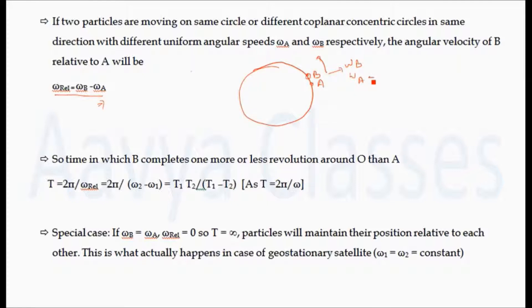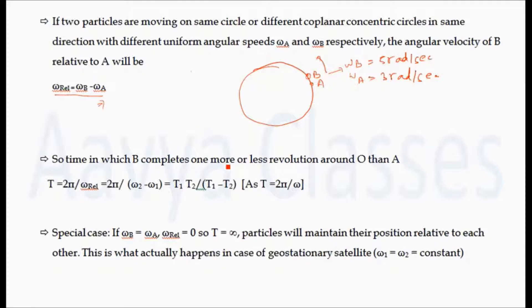Suppose omega_a = 3 radians per second and omega_b = 5 radians per second. That means in one second, omega_b will move 2 radians more than particle a. So particle b moves a bit faster and will cover the circle in less time compared to particle a. Now we will calculate the time in which particle b completes one revolution more than particle a, since omega_b is greater than omega_a.